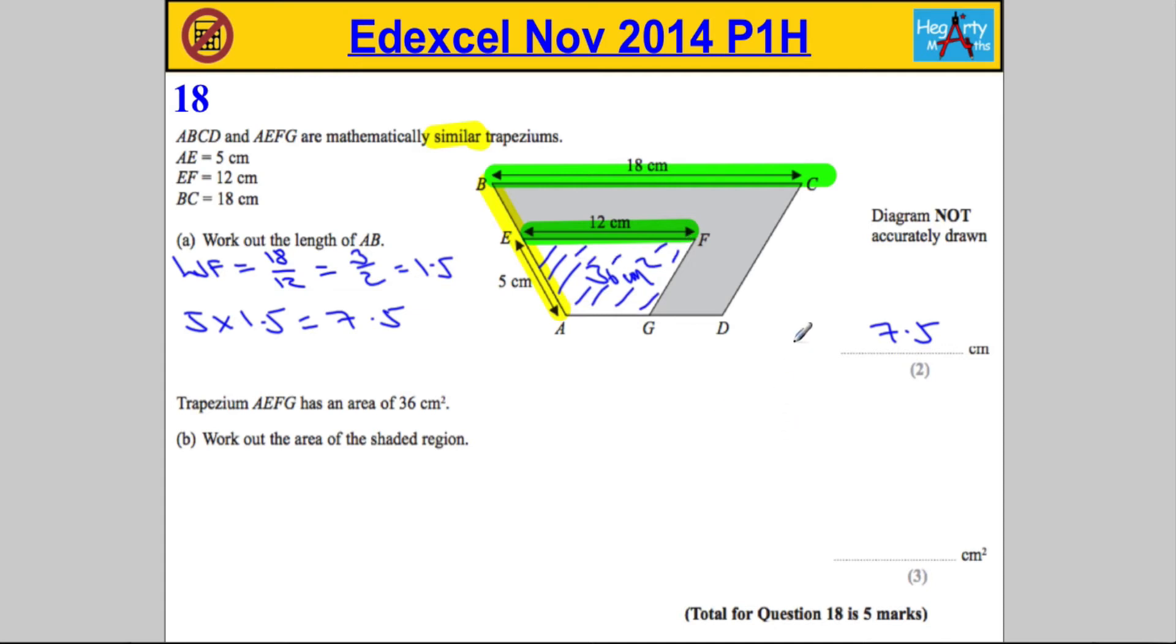Now, if I was normally doing this, what I would do is I'd like to know the area of the big trapezium, and then I would subtract the area of the small trapezium, and that's going to give me the shaded region. So let's go for working out the area of the big trapezium.